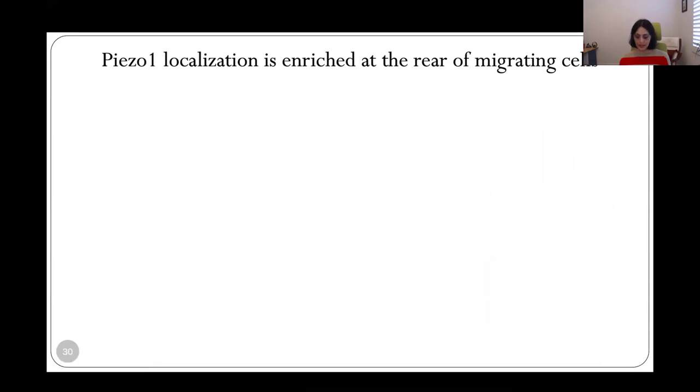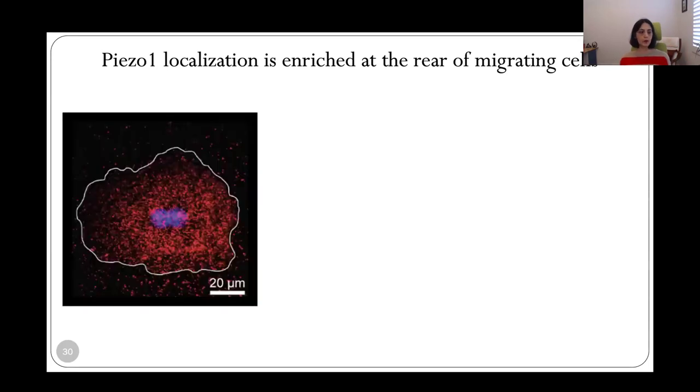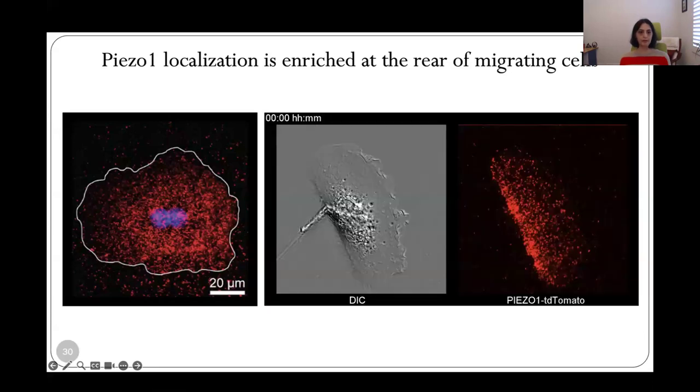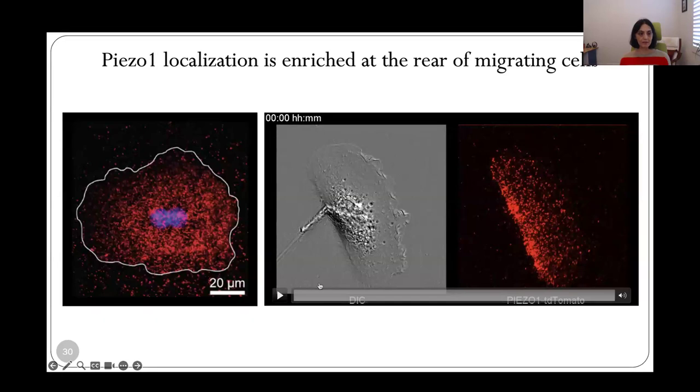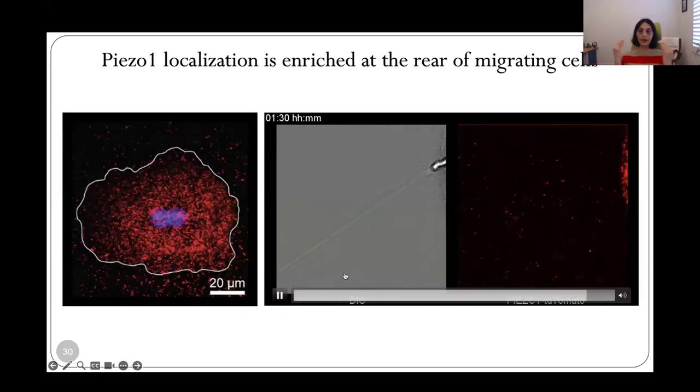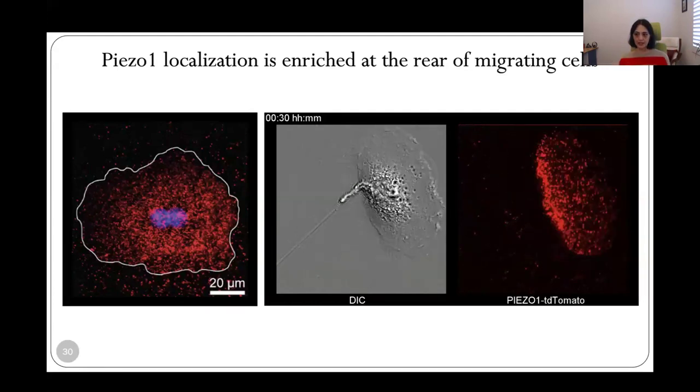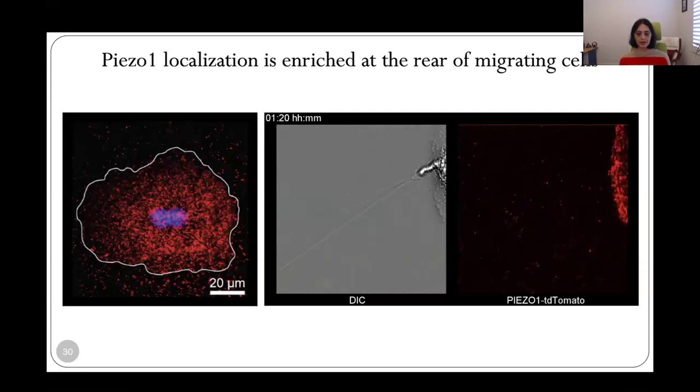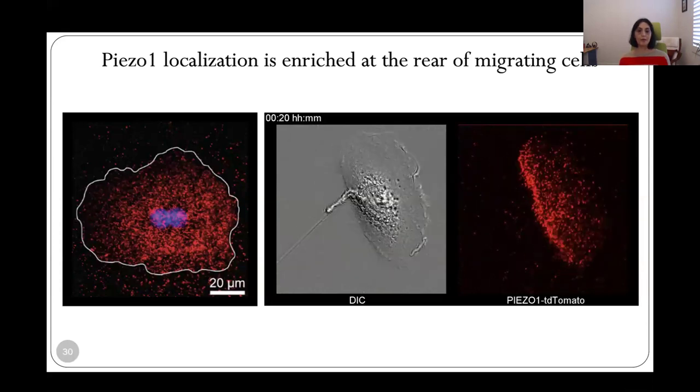We wanted to visualize the channel to understand how it may be exerting these effects. And so we used a Piezo1 tdTomato reporter mouse. This is a model made by Ardem's lab where the endogenous Piezo1 is tagged with the tdTomato reporter protein, and we harvested keratinocytes from these mice. In non-migrating keratinocytes, we found that Piezo1 is distributed kind of all over the cell surface. But then, when we look at actively migrating cells, we found that the channels shown here in red are enriched at the back of the cell. The rear of the cell is a site of maximal retraction forces, and this hinted to us that Piezo1 may be involved in retraction.